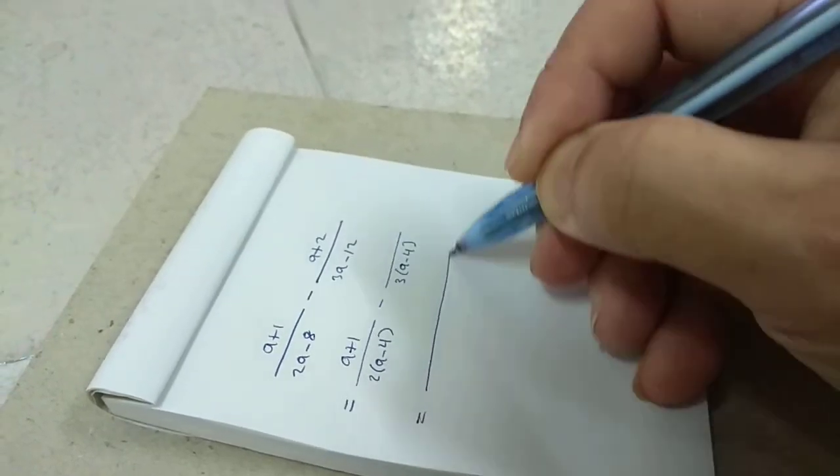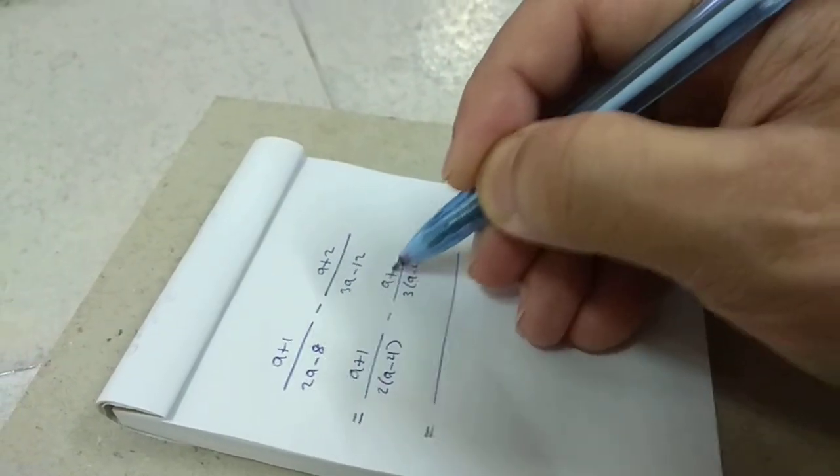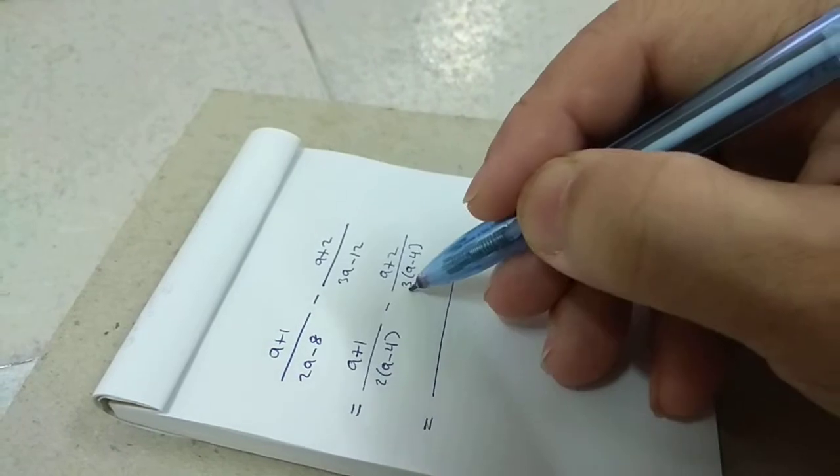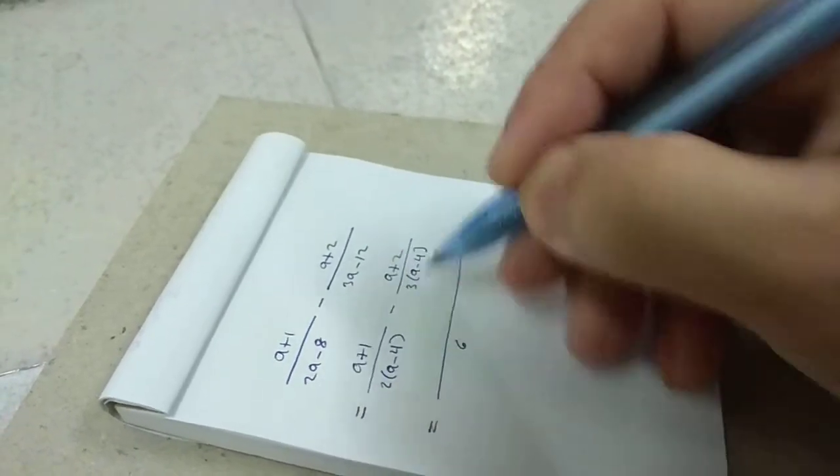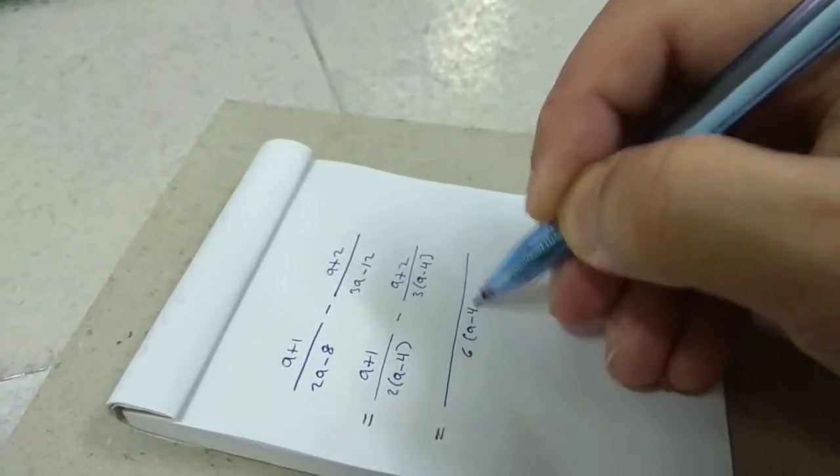So, the least common denominator: 2, 3 gives 6, and a minus 4, a minus 4.